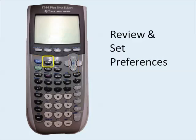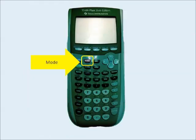Next, let's visit mode to review preferences for the calculator. Generally, I leave my preferences in the factory default settings, but you may choose to change a setting, so you need to know where to find them. To exit mode, we're going to use quit, which is the second function of mode. So we tap the blue second function key and then the mode key. This returns us to our normal screen.